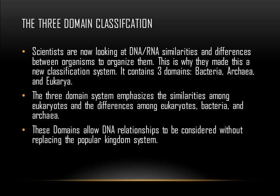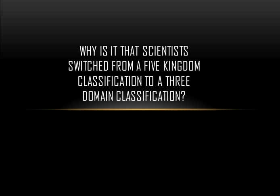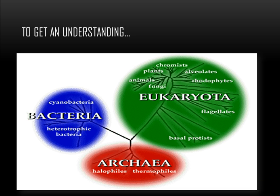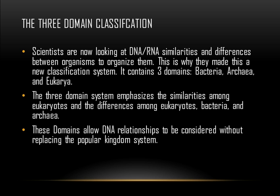By using domains, DNA relationships are able to be considered without replacing the popular kingdom system, which is the five-kingdom classification. So, to go back to the question — why is it that scientists switched from a five-kingdom classification to a three-domain classification? — it is because the three-domain classification considers the new DNA relationships, and is able to do so without replacing the old kingdom system used in the five-kingdom classification.